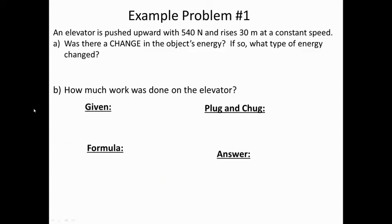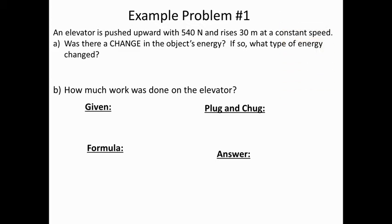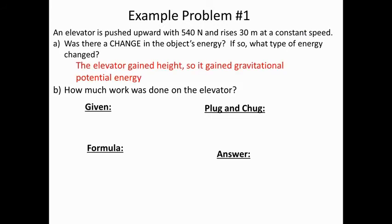Let's try some example problems. In example one, an elevator is pushed upward with 540 newtons and rises 30 meters at a constant speed. Was there a change in the object's energy? Hopefully you realize it's gaining height, so it's gaining gravitational energy. Because it is gaining gravitational potential energy as a result of that force, work is being done and we can solve for it.